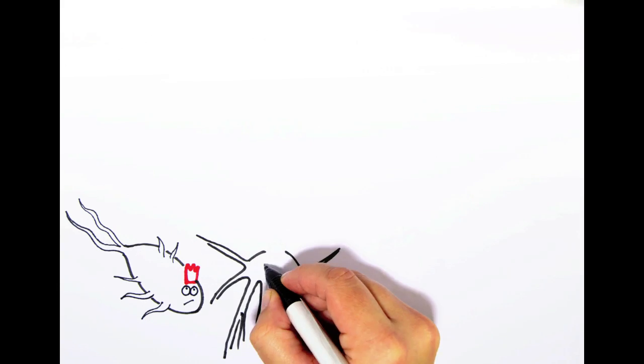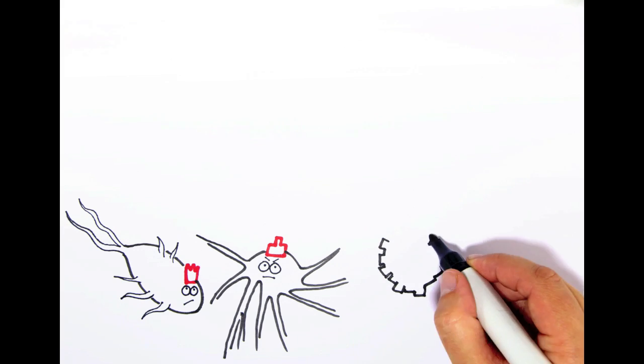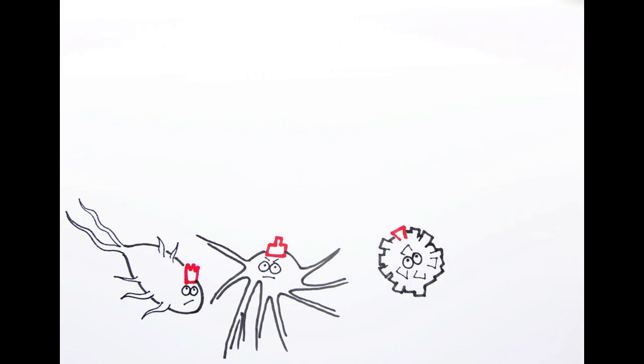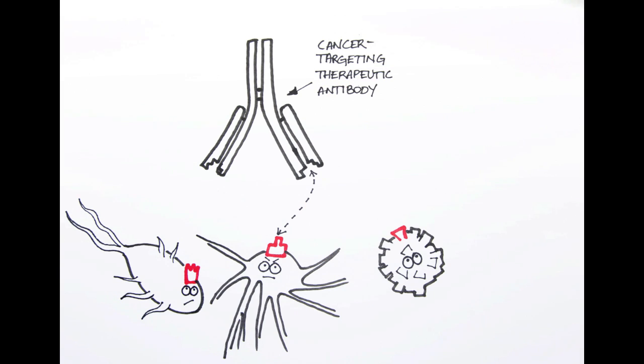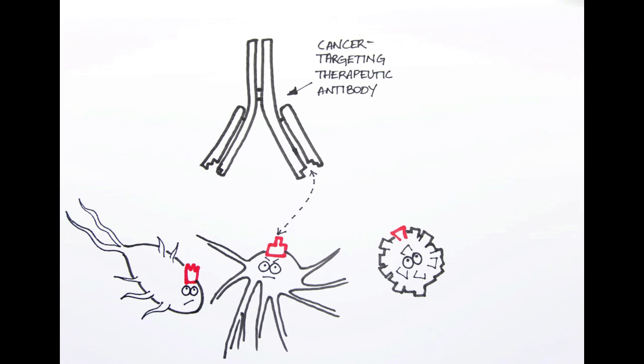The antigen can be a protein on the surface of a bug or a cancer cell or anything else that is considered foreign, suspect or threatening to your body. When this offender is causing a disease and the antibody is designed and produced specifically to target it, then you have a therapeutic antibody.